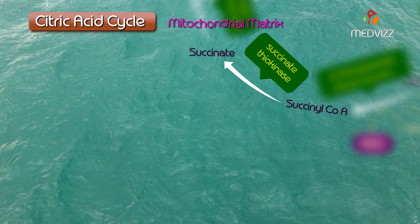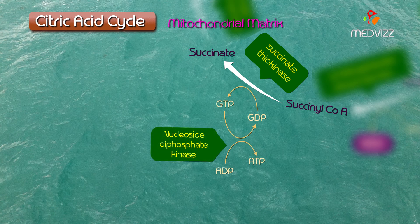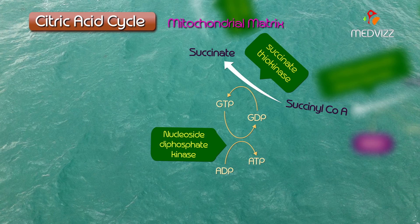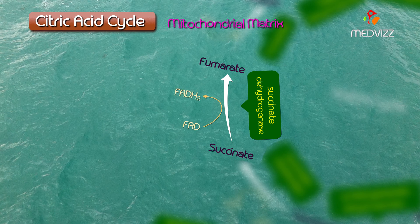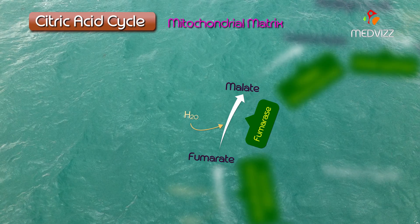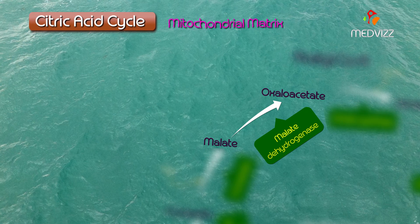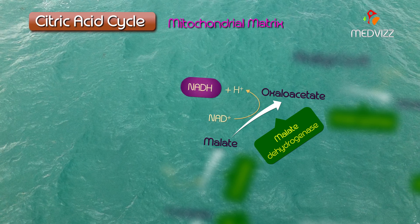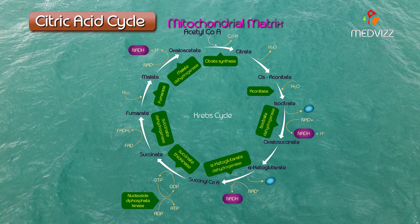Succinyl-CoA synthase converts succinyl-CoA into succinate and coenzyme A via substrate-level phosphorylation, producing GTP, which is then converted into ATP. Succinate dehydrogenase catalyzes the oxidation of succinate to fumarate, converting FAD into FADH2. Mitochondrial fumarase converts fumarate to malate, and finally malate dehydrogenase oxidizes malate to oxaloacetate, producing the third NADH molecule, and the cycle can begin anew.